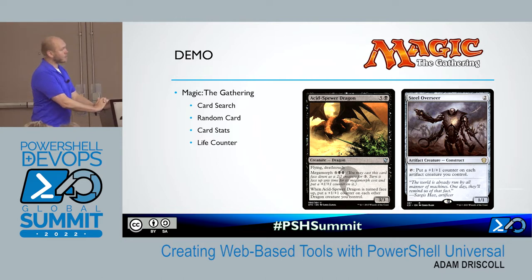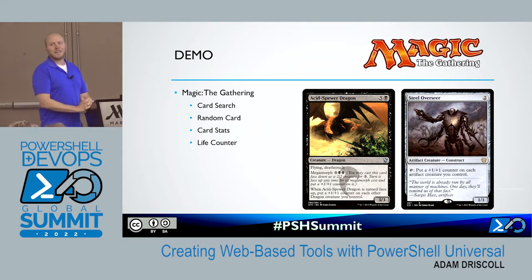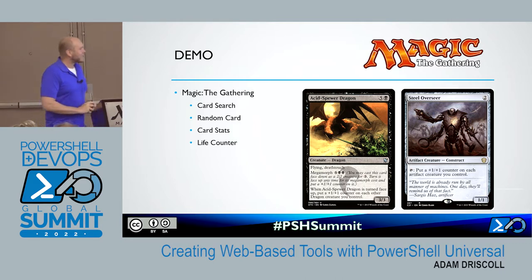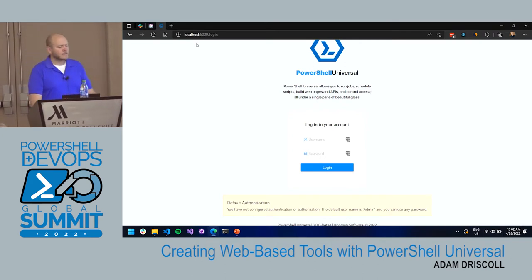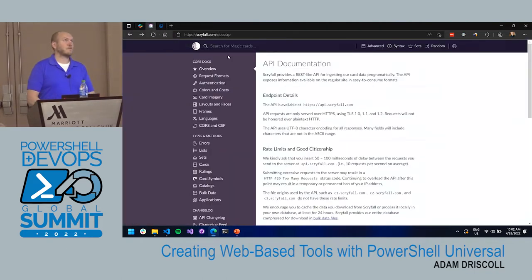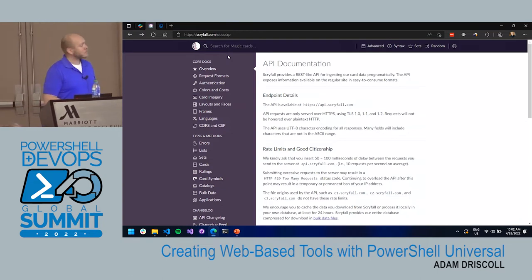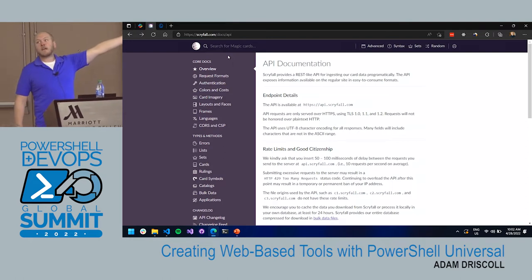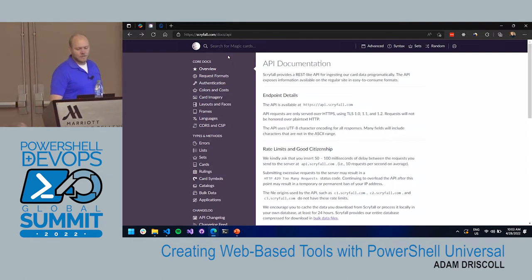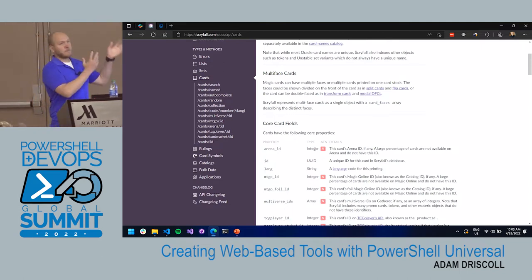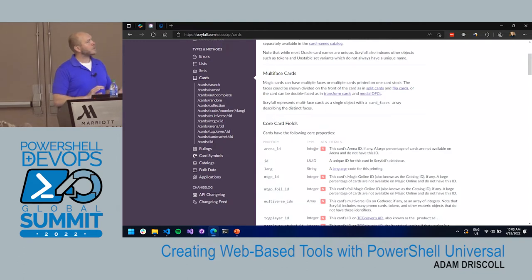What we're building today is a Magic the Gathering card search, random card, card stats, and life counter — keeping it light on the last day. Magic the Gathering is a card game that's been around since the early 90s and has a passionate following. Someone has created an API for it called Scryfall, which has endpoints for cards, sets, and more. We can consume that in PowerShell using Invoke-RestMethod — they have images and all kinds of stuff — and it's going to give us a lot to show inside PowerShell Universal.